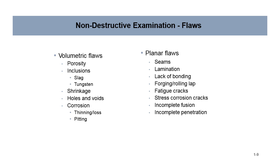We should have a baseline of terms to describe flaws. Volumetric flaws include porosity, inclusions (this includes slag and tungsten), shrinkage, holes and voids, corrosion, thinning and loss, and pitting. Planar flaws are seams, laminations, lack of bonding, forging and rolling lap, fatigue cracks, stress corrosion cracks, incomplete fusion, and incomplete penetration. You don't need to memorize them right now, but you should have a general idea when somebody is talking about the various types of flaws so you can have an intelligent conversation without confusion.